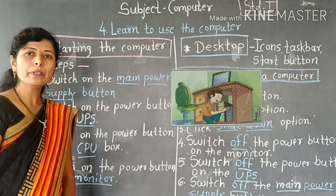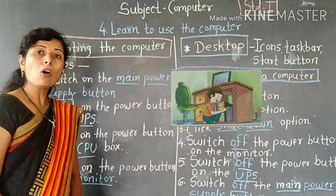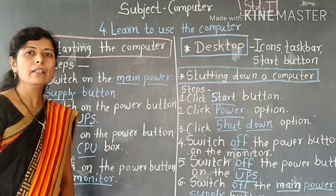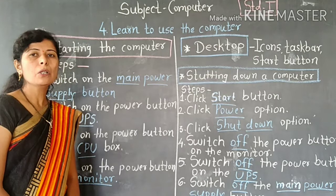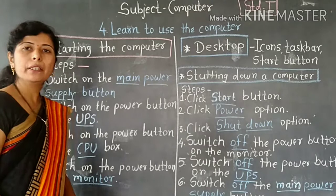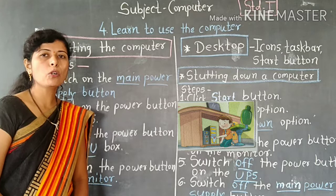UPS is a backup device. When electricity goes off, for a few seconds your computer stays on — it is a backup device. The next step is to switch on the power button on the CPU box. The CPU box looks like a metal box.